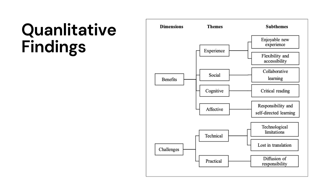While there are many benefits, students also reported challenges with technical aspects, as the circles are conducted online — technological limitations including internet connectivity and various other technical problems. Additionally, there is a 'lost in translation' effect, meaning it is quite difficult for students to get their message across, and finally, diffusion of responsibility, where some students are not doing their work very well.